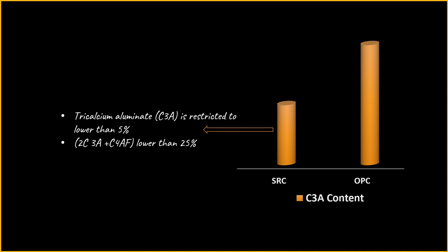SRC is manufactured by modifying the composition of ordinary Portland cement. The main elements that contribute to sulfate reaction are the presence of C3A and C4AF. A sulfate-resisting cement is designed such that the amount of C3A is kept below 5%, and the overall quantity of C3A and C4AF is kept below 25%. This helps to reduce the formation of sulfate salts that are by-products of sulfate attack.